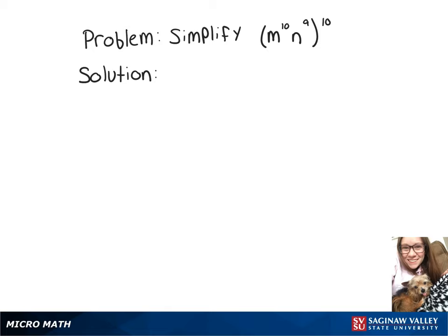To simplify m to the 10th times n to the 9th, raised to the 10th, we need to multiply our exponents. So we'll do m to the 10 times 10, times n to the 9 times 10. Our final answer is going to be m to the 100 times n to the 90.